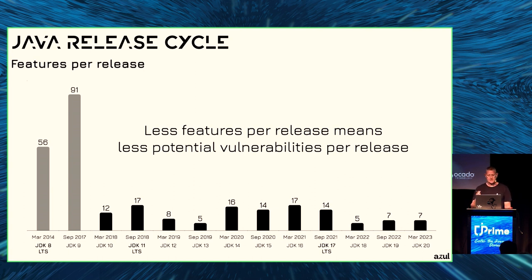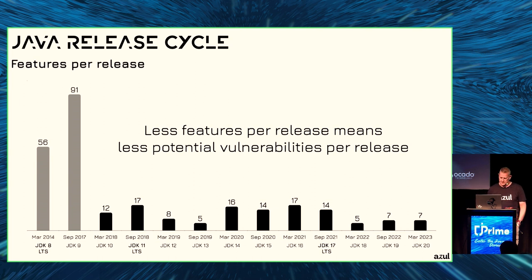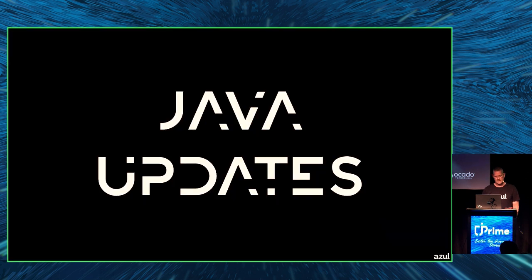In the old cadence, JDK 8 had 56 JEPs and JDK 9 had 91 — and with the module system, you can imagine the huge opportunity for vulnerabilities that is hard to test. In the new cadence the numbers are much lower, making it easier to ensure the code is secure. Less features per release means less potential vulnerabilities — that's why the release cycle is an important part of security within the JDK.